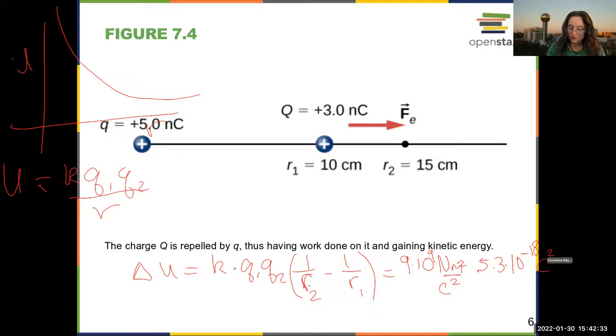times 5 times 3 times 10 to the negative 18 coulomb squared, times 1 over 0.15 minus 1 over 0.1. And my handwriting gets a little cramped in the end. So that's the change in potential energy.